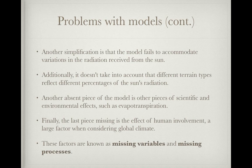Additionally, it doesn't take into account that different terrain types reflect a percentage of incident radiation. For example, snow reflects almost 90% of incident radiation, whereas asphalt is going to absorb all of it. Another absent piece of the model is that other physical and environmental effects such as evapotranspiration are not included. There are obviously other scientific processes that we could incorporate. Finally, the last piece missing is the effect of human involvement — a very large factor. Emission of greenhouse gases and heat input from human activity are known as missing variables and missing processes.